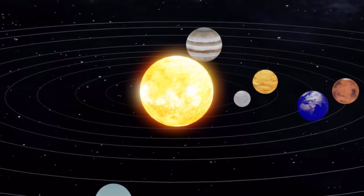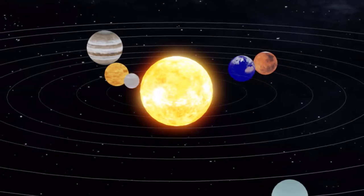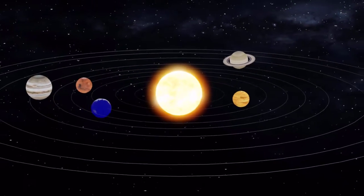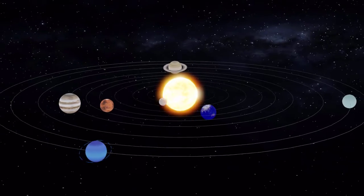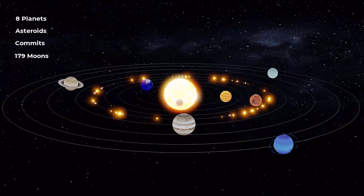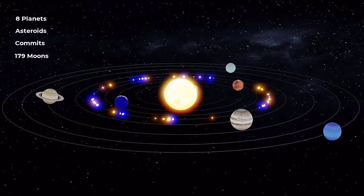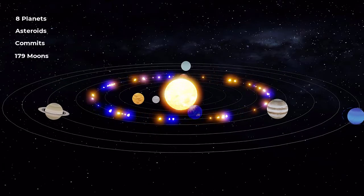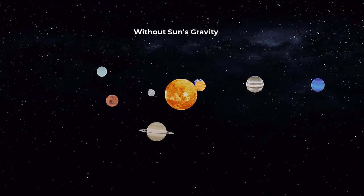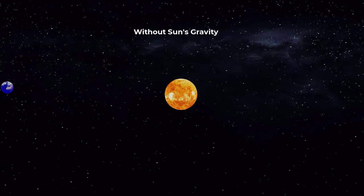At the center of our solar system, more than just a source of light and heat, this giant ball of plasma holds the solar system together. The Sun's powerful gravity keeps eight planets, dozens of asteroids and comets, and 179 moons in their orbits. Without the Sun's gravity, these celestial bodies would drift off into deep space.